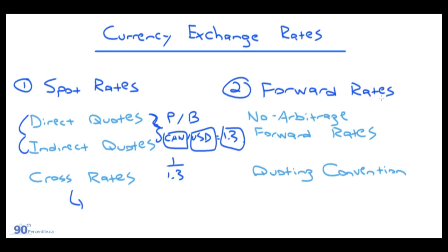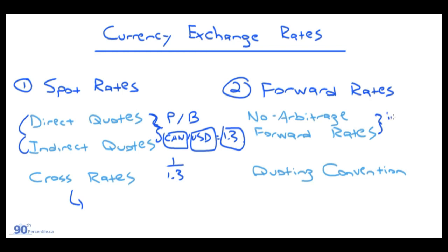Moving on, we're talking about forward rates. We'll discuss a no-arbitrage condition that equates spot rates and forward rates. This is mainly reliant on risk-free interest rates present in each country of the currencies we're discussing. We'll also cover the quoting convention — the way forward rates are presented in the market versus spot rates. With that, let's jump into the questions.